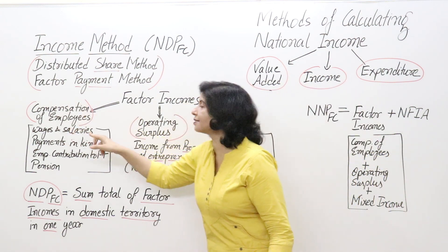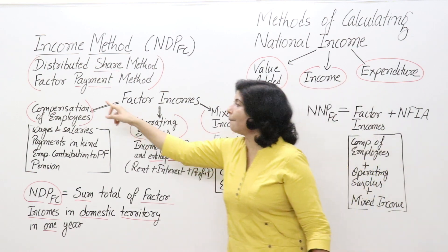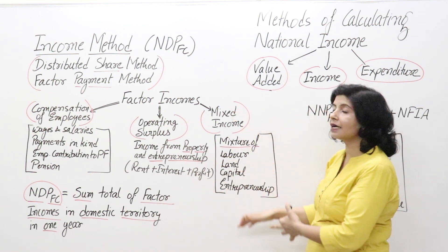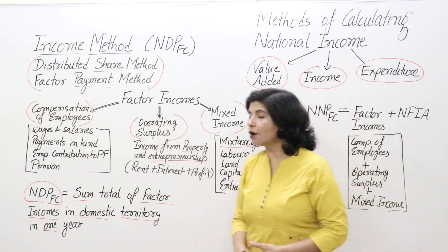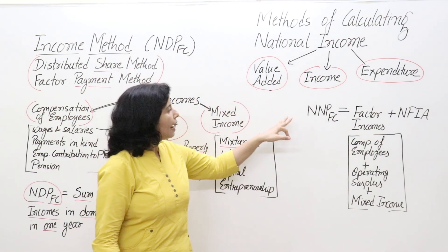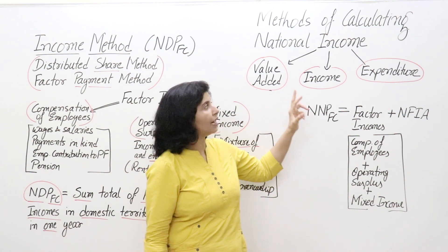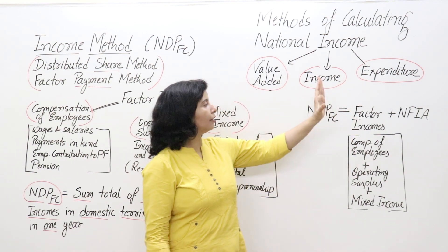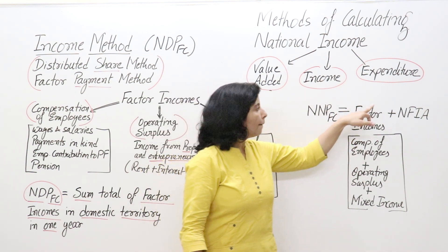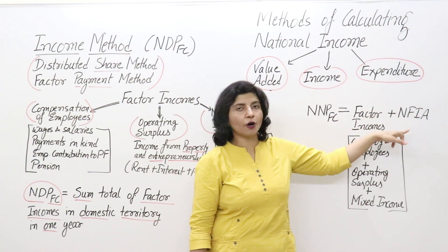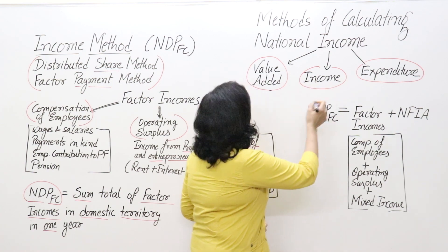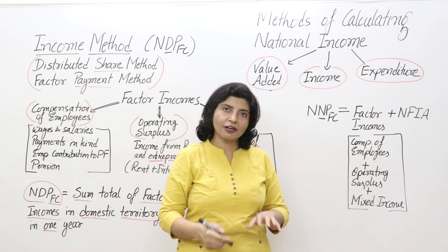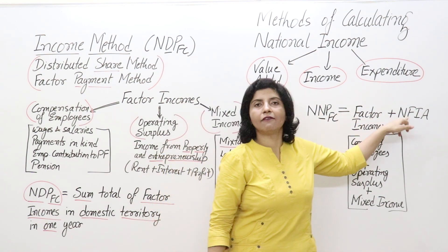To summarize the income method: compensation of employees covers wages, salaries, payments in kind, etc.; operating surplus is income from property and entrepreneurship; and mixed income is income of self-employed people. The formula for NNP at Factor Cost using the income method is: NNP FC = Compensation of Employees + Operating Surplus + Mixed Income + NFIA, because we must add Net Factor Income from Abroad to convert domestic income into national income.